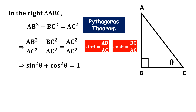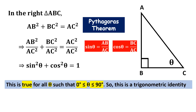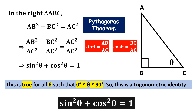This is the first trigonometric identity which we have proved. This relationship sin²θ + cos²θ = 1 is true for all θ such that θ lies between 0 and 90 degrees. So this is called a trigonometric identity. Thus we get our first identity: sin²θ + cos²θ = 1.